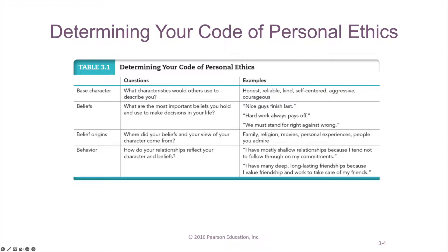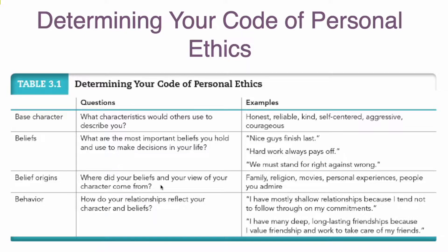Or somebody may have the belief that we must stand for right against wrong — just being a spectator or sitting quietly and not participating in important things, not having any voice — some people think that's not good. They will always say what is right or stand against what is wrong. Then there are belief origins: why is somebody like that, and where did your beliefs or your view of your character come from?